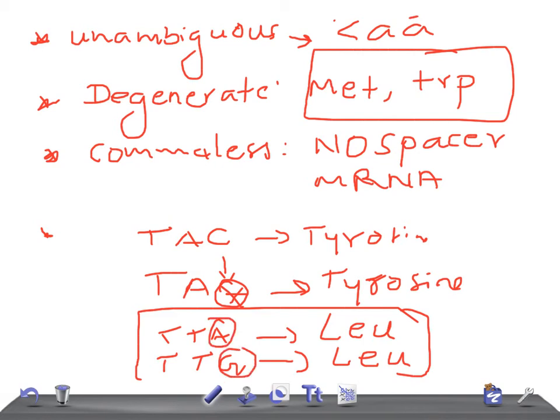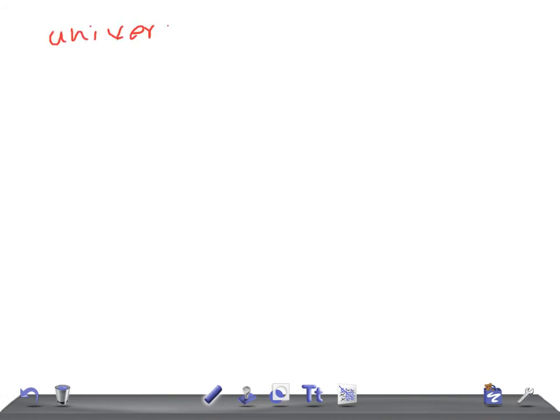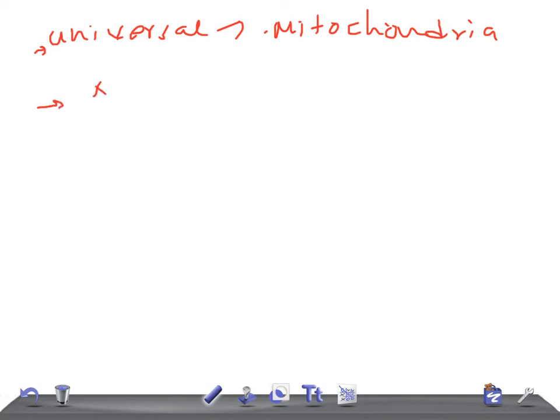The genetic code is universal — it is the same in all animals and organisms, with only some minor variations in mitochondria. Additionally, neighboring codons on a messenger RNA are non-overlapping.